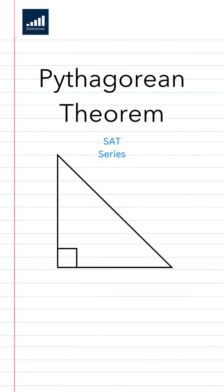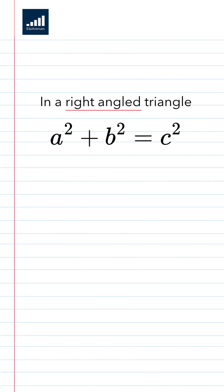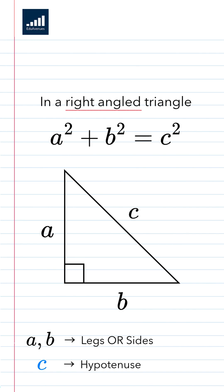Let's tackle the Pythagorean theorem, a must-know SAT formula. In a right-angled triangle, the sides follow this rule: a squared plus b squared equals c squared, where a and b are the legs and c is the hypotenuse, which is the longest side.